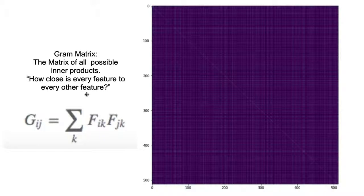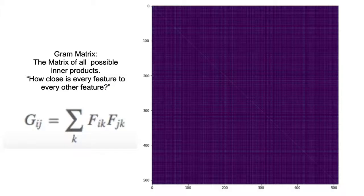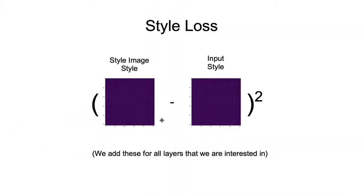Once we find the gram matrix of the style image and the gram matrix of the output image of the style features, then we just subtract them and square them.